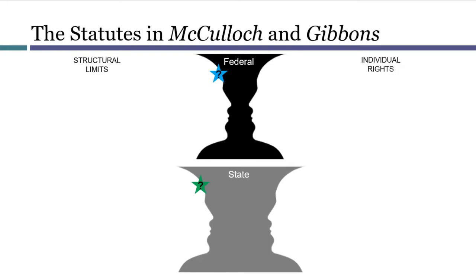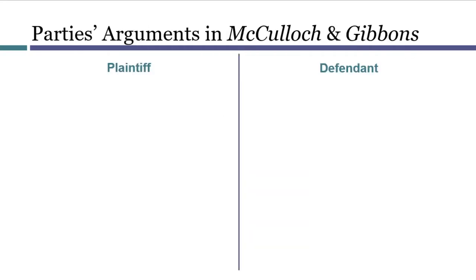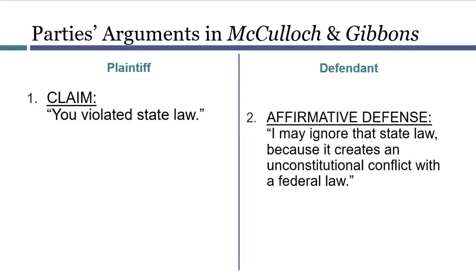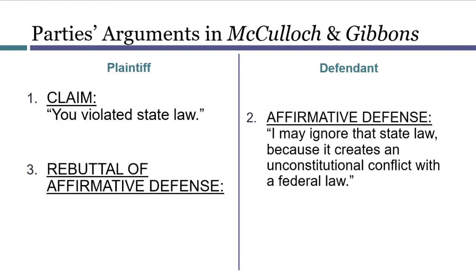Both cases called for the court to rule on the constitutionality of two different statutes — one federal and one state. The court needed to decide if either or both of the laws were constitutional. Procedurally, both cases began with a plaintiff arguing that a defendant violated state law. In each case, the defendants had indeed violated state law, so the case really hinged on the affirmative defenses raised by the defendants — specifically, that the state law was unconstitutional because it conflicted with a federal law. The plaintiffs then responded with two arguments.